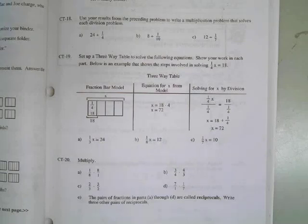So here's CT-19: Set up a three-way table to solve the following equations, show your work in each part. There's an example straight out of your book, and this is so useful. In future problems with a three-way table, remember CT-19. In addition to this video, you've got an example right there in your book that shows you all the details, and we also took notes in class when I taught this for the first time. All right, to the paper.